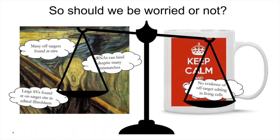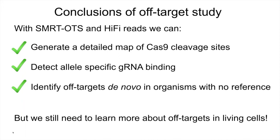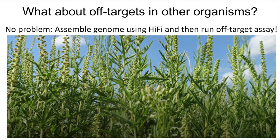Coming back to the initial question: how worried should we be? This project has been a bit of a roller coaster. We did find a lot of targets using our methods in vitro. We see that the guide RNAs can bind despite having many mismatches. We also see large structural variants — big deletions and insertions — at the on-target sites in edited fibroblasts. Those things would make me quite worried. But when we do experiments on living cells, we don't see any evidence of off-target editing. Maybe it's not that bad after all, but we need to study this in more depth. We can get a very detailed map of Cas9 cleavage sites, find allele-specific guide RNA binding, and use these approaches to look at off-targets in organisms that don't have a reference. We still need to learn more about how off-targets work in living cells, and these approaches should also work for plants or other organisms.